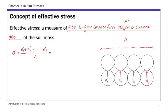So σ' equals the sum of all these small n' values — that's the grain-to-grain contact force for the two rows of soil grains — divided by the cross-sectional area A. We call this sum capital N', so σ' = N'/A, where N' = Σ n'_i. That's just a force per area. And if the soil is completely bone dry, that's it — grain-to-grain contact force per area is the full definition of effective stress.